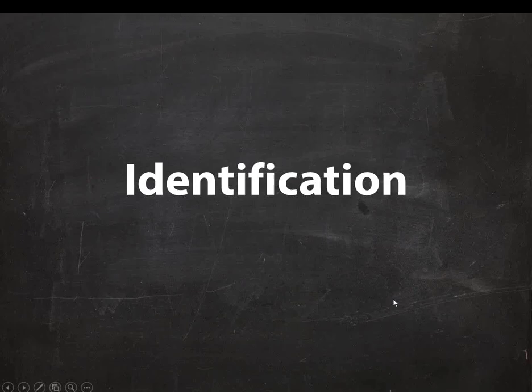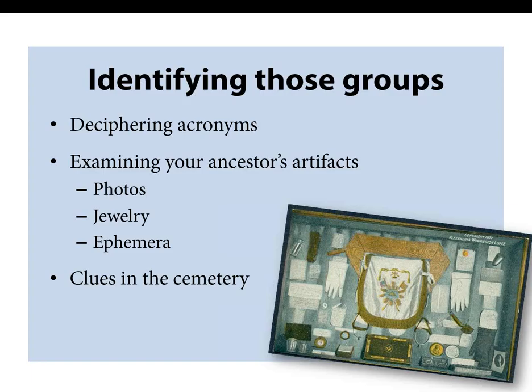The biggest question is how do I identify the groups that my ancestors were members of? One way is deciphering the acronyms. Sometimes you may have artifacts like photos, jewelry, or other ephemera handed down in the family that you don't know what they are, but they may be the clue to groups your ancestor belonged to. And of course there are often clues in cemeteries on tombstones. So we're going to talk about how to identify some of those groups using various sources.